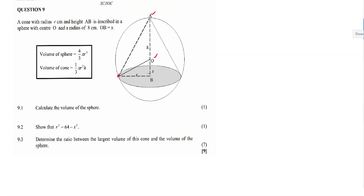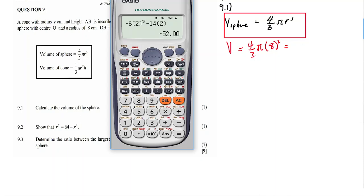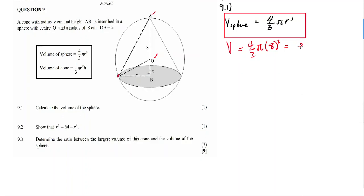Now, 9.1. We are given the volume formula for the sphere, which is equal to 4 over 3 pi r cubed. We have to calculate the volume of the sphere for one mark. So volume is equal to 4 over 3 pi, the radius is 8, cubed. Our answer is 4 over 3 times pi times 8 to the exponent 3, which is approximately 2144.66 centimeters cubed.